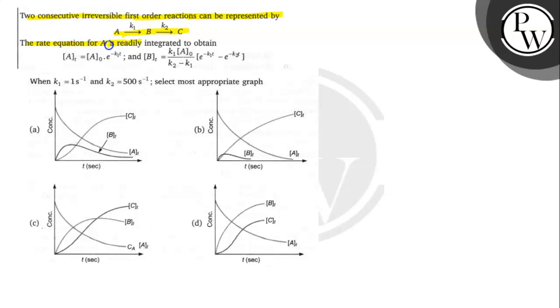The rate equation for A is readily integrated to obtain the rate equation of A, and this is the rate equation of B at time T. This is the value and the equation.